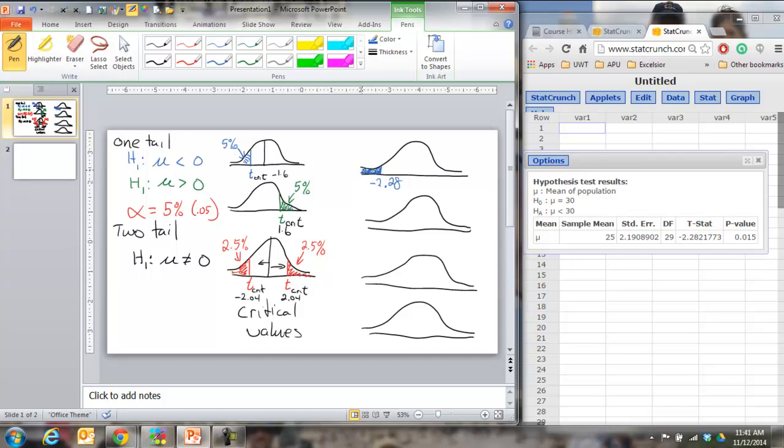And that p-value of .015 represents all the area to the left of it. StatCrunch just gives you this area because it knows that you were doing a left tail test. And because our p-value is .015 which is smaller than our alpha we would reject. We can also see that this number is further to the left than this number which also tells us to reject. Okay? We could do the exact same thing with an upper tail test and we would get the same results.